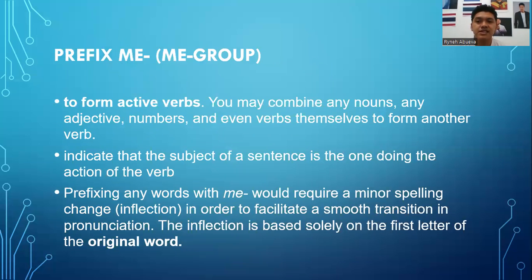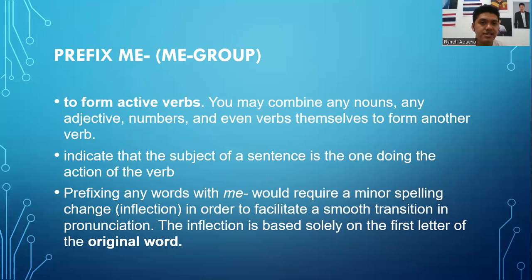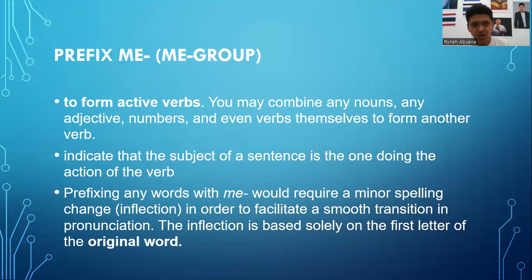The next prefix group is me- or the me- groups. The functions of this group are: first, to form active verbs — you may combine any nouns, adjectives, numbers, or even verbs with me- to form another verb. Second, to indicate that the subject of the sentence is the one doing the action of the verb. And the last function is that prefixing any word with me- would require a minor spelling change.